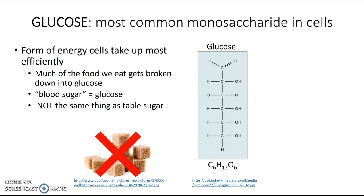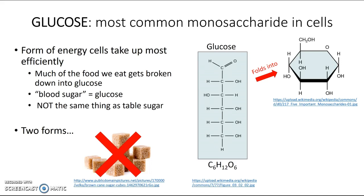In terms of its structure, there are actually two forms of glucose. One is a straight chain form, but that only occurs when the glucose is completely dry. Since your body has a lot of water in it, the glucose takes on a different form. When it's in a watery environment, it folds up into a ring. This ring diagram may look weird because the carbons aren't written out — in this shorthand organic chemistry diagram, the corners represent carbons.